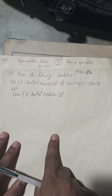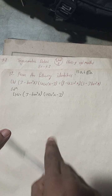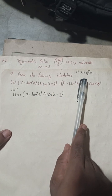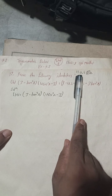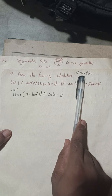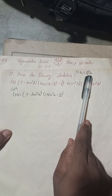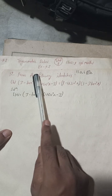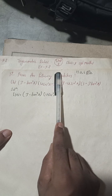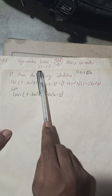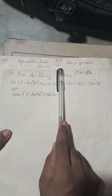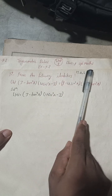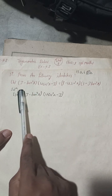Hi everybody, welcome back. This is question number 12b solutions — solutions for 13a, 13b, and 12a are already uploaded. This is exercise 9.2, trigonometric ratios, unit 9, class 9 optional mathematics.